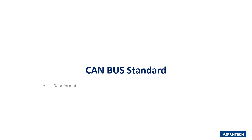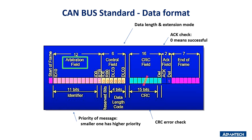The CAN bus packet format consists of five main fields. The arbitration field starts with the start-of-message bit and helps assign priority among devices — necessary when multiple devices try to access the bus simultaneously; only one device transmits at a time while others listen. The identifier is specified during system design and cannot be changed dynamically. The control field contains the number of bytes being transmitted. The CRC and ACK fields are used for error detection — if errors are detected the transmission is aborted. Finally, the end-of-frame field marks the end of the CAN message.